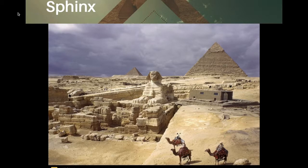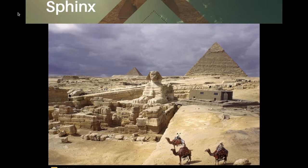It is the largest single sculpted statue in the world, carved from the bedrock of the plateau. The Sphinx has the body of a lion and the head of a human, and there is a temple actually between its paws. The origin and purpose of the Sphinx is still a mystery — it's a puzzle that may never be fully resolved. The Sphinx has many archaeological digs all around it, because this was a very populated area not far from Cairo.